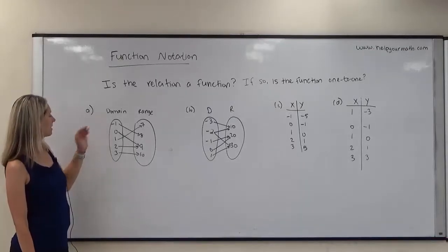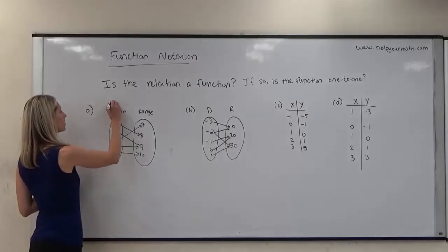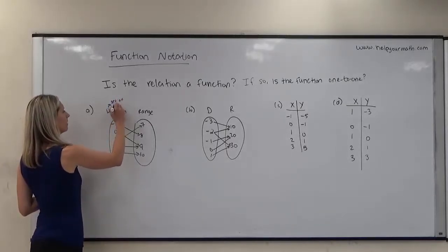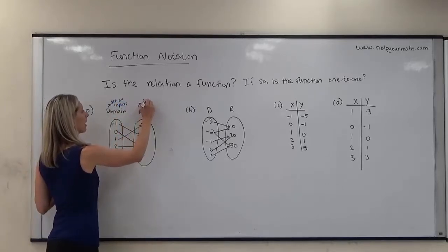So in the first case, we're given the domain. Remember the domain? That's the set of input or the set of x values. So this is the set of inputs. And then we have the range, which is the set of outputs.